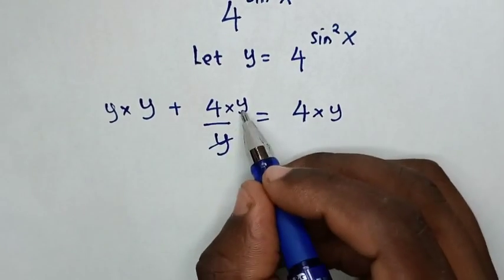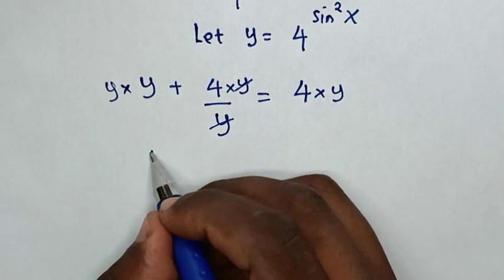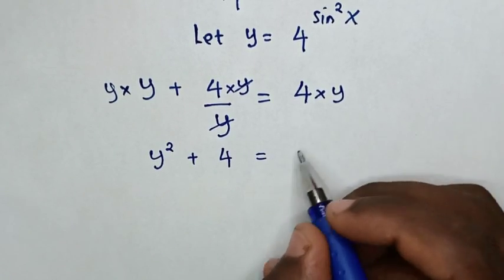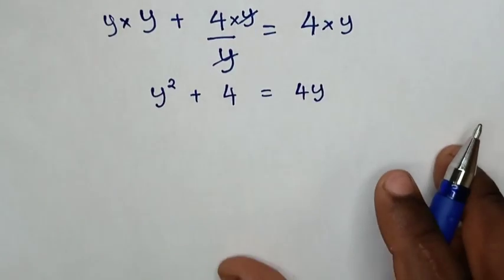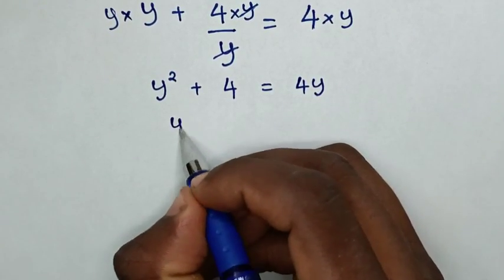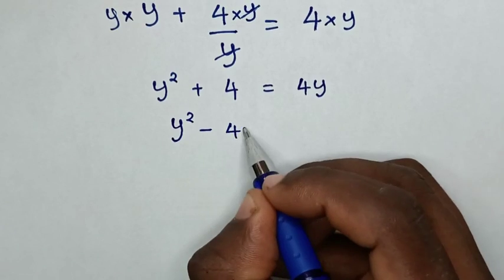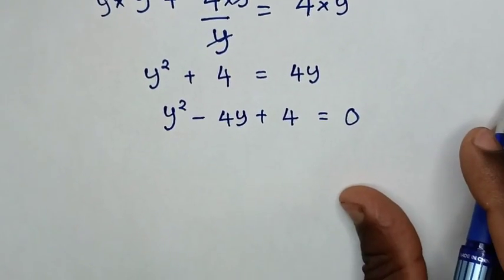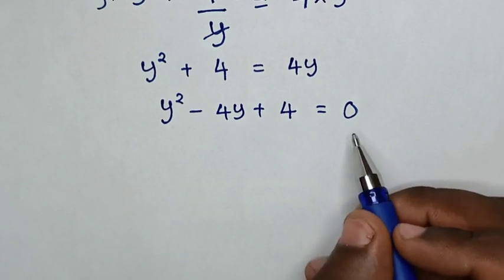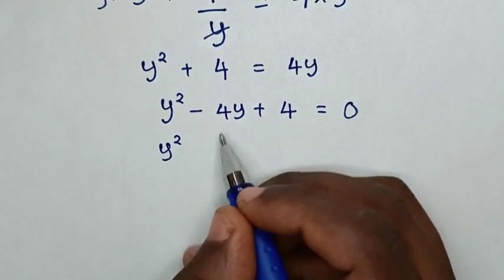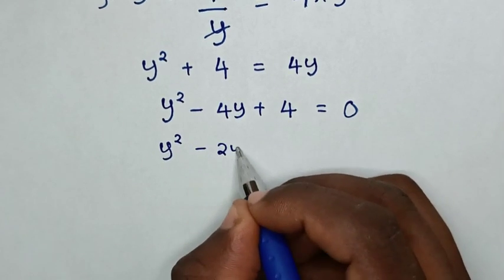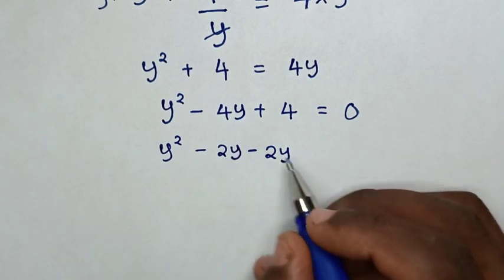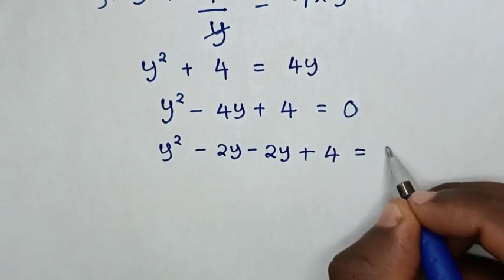The y cancels in the fraction, giving y squared plus 4 equals 4y. Taking 4y to the left side, we get y squared minus 4y plus 4 is equal to 0. From this quadratic equation, we solve by factorization: y squared minus 4y is split as negative 2y minus 2y, then plus 4 equals 0.